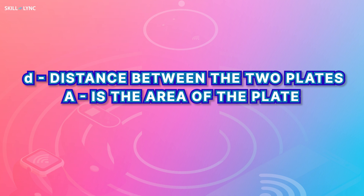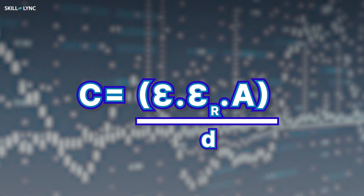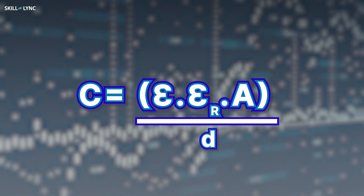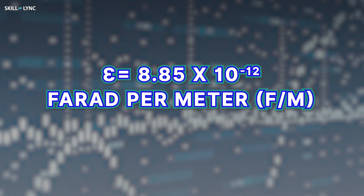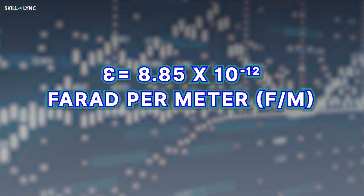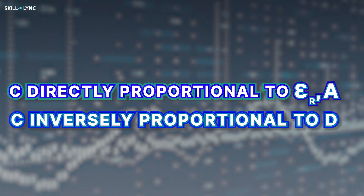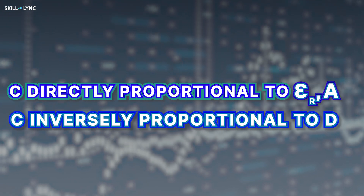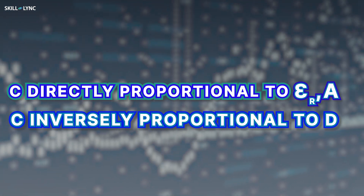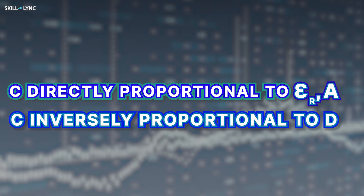D is the distance between the two plates and A is the area of the plate. The permittivity of free space is a constant whose value is approximately equal to 8.85 × 10⁻¹² farads per meter.